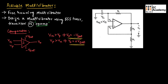The voltage across the positive terminal VP, applying the voltage divider rule, is equal to R2 divided by R1 plus R2, multiplied by V0. We can take R2 divided by R1 plus R2 as a new term beta, so VP equals beta times V0. The output voltage of this circuit can be plus V saturation or minus V saturation depending upon the voltages VN and VP.